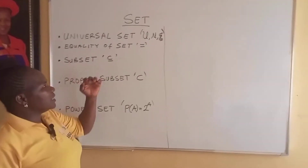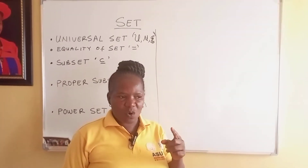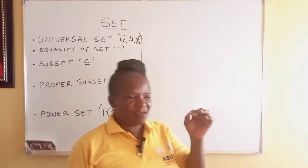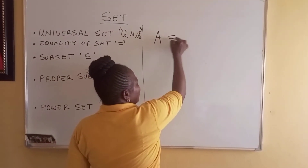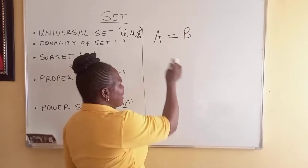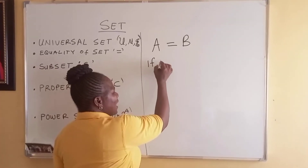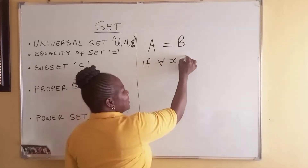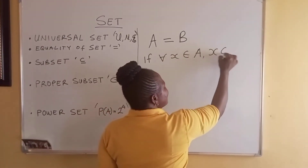Now, we have equality of sets. We say that two sets are equal if they contain the same elements — if all elements in A are in B. Mathematically, we write: A equals B if for all X in A, X is in B.